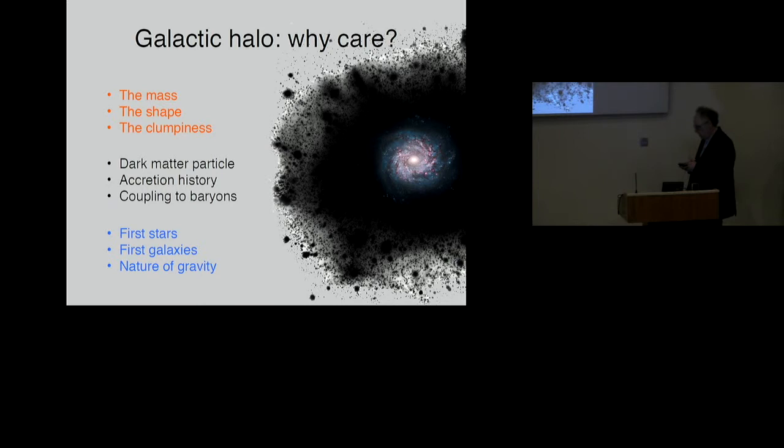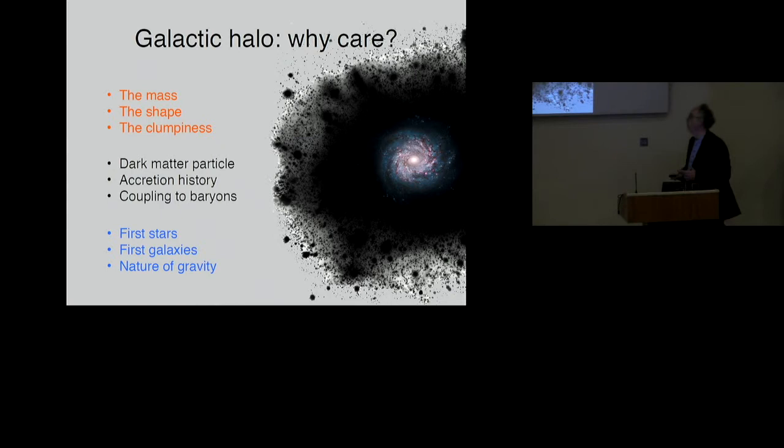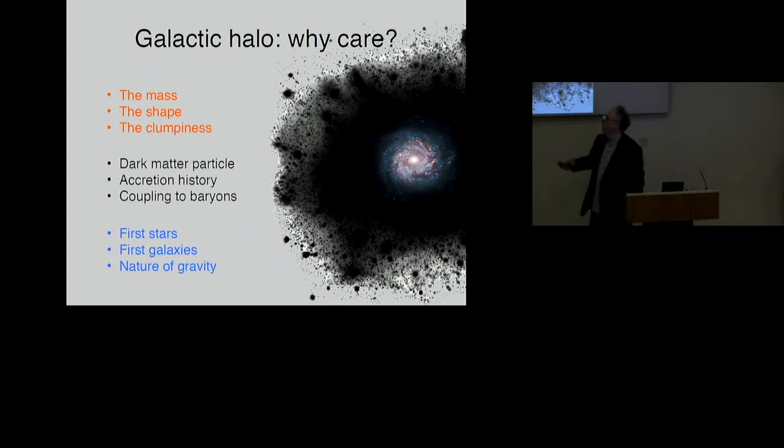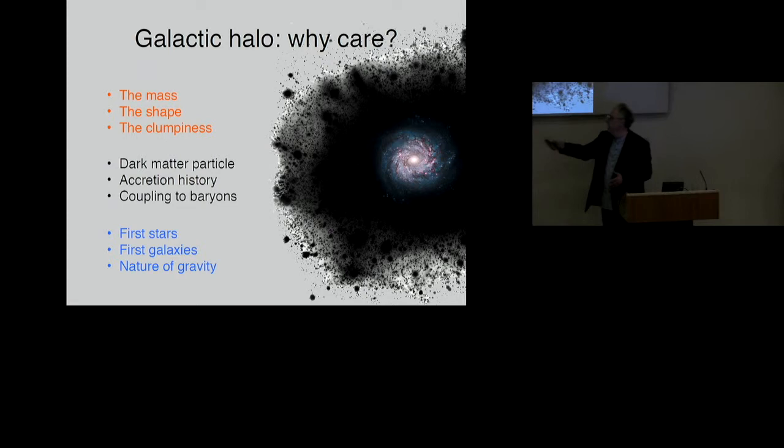But the main dish is the Gaia sausage. The Gaia sausage is a structure in the stellar halo of our own galaxy. Here is our galaxy, and it's surrounded by tenuous stellar material, the stellar halo of the galaxy. We're interested in this component of the galaxy. We're interested in its mass and its shape and its clumpiness, because it was built up from the accretion of many smaller objects. The accretion history of our galaxy, we would like to know, because it tells us about the dark matter particle and the coupling of baryons to dark matter, and therefore it is concerned with fundamental problems regarding the first stars and the first galaxies and the nature of gravity itself.